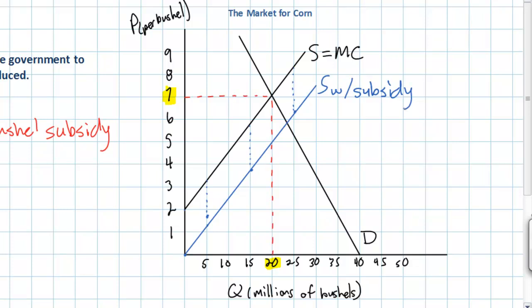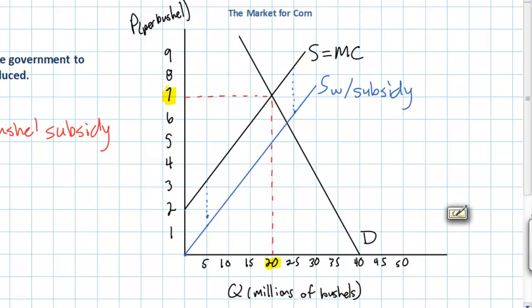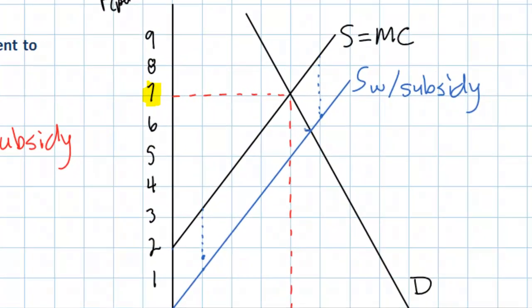This reflects the fact that producers of corn are now receiving a $2 subsidy for every bushel of corn that they produce. As we can see, following the subsidy the supply of corn has increased and the equilibrium price paid by consumers has decreased.